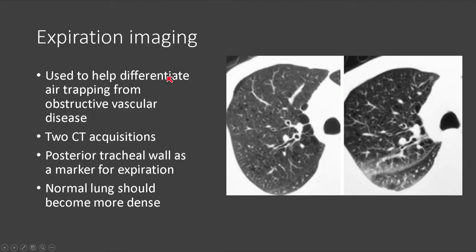In cases where secondary signs are insufficient to differentiate air trapping from obstructive vascular disease, we can use expiration imaging. Expiration imaging is acquired after a standard inspiratory CT scan — a second CT is then acquired with the patient breathing out and holding their breath at expiration.